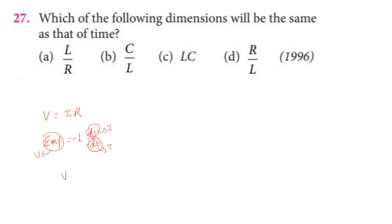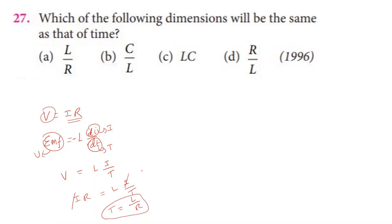So L/R dimension equals time dimension. That is, the coefficient of self-inductance divided by resistance has the dimension of time. This confirms L/R is the time constant. That is the dimension formula for this units and dimensions topic.